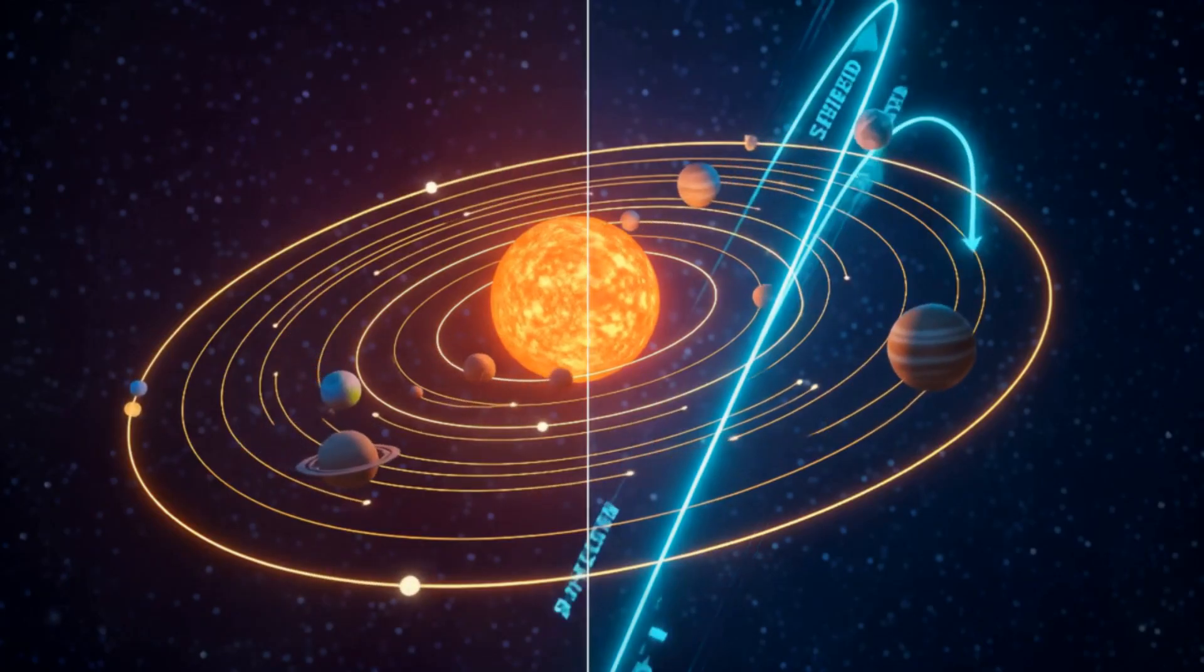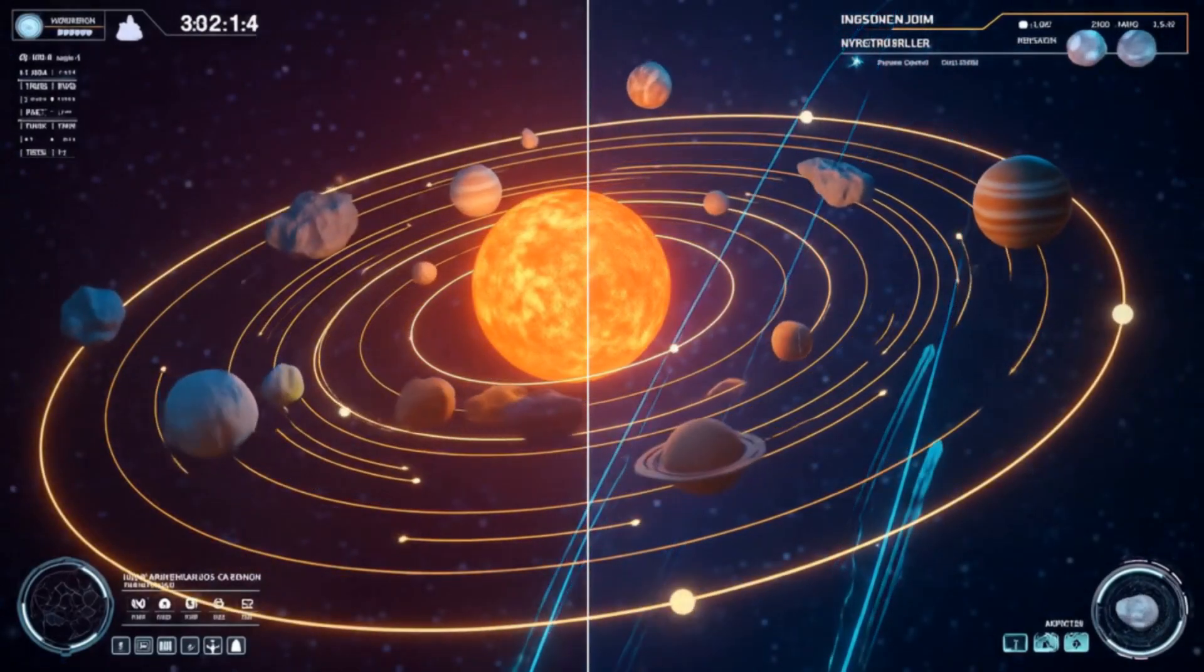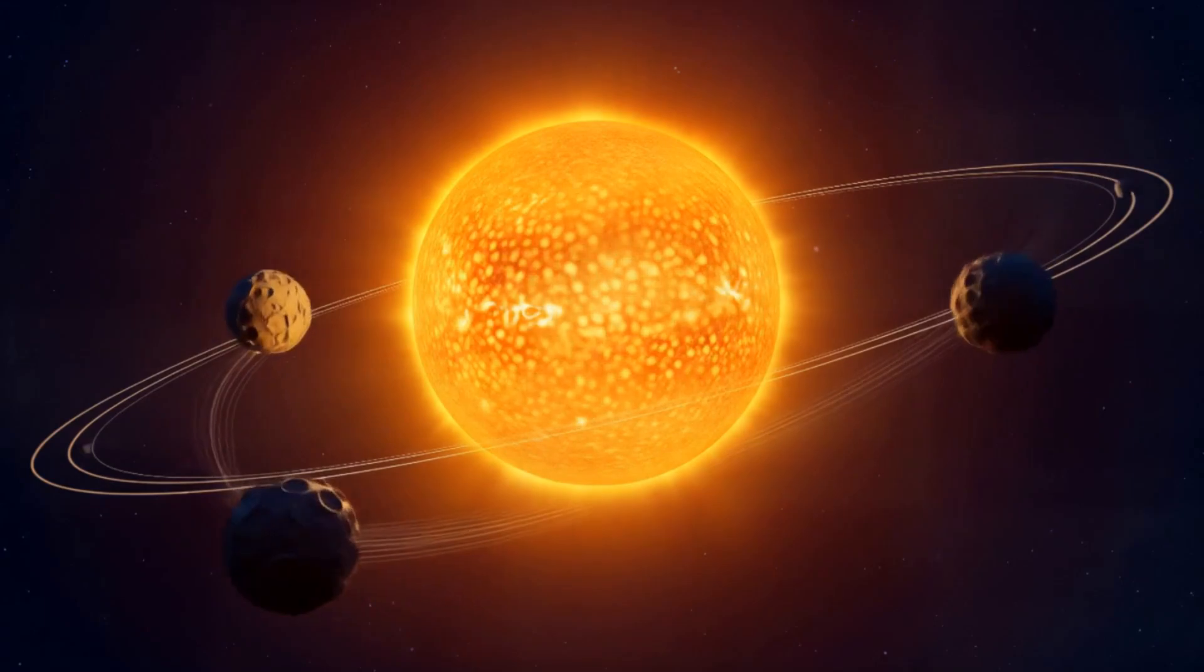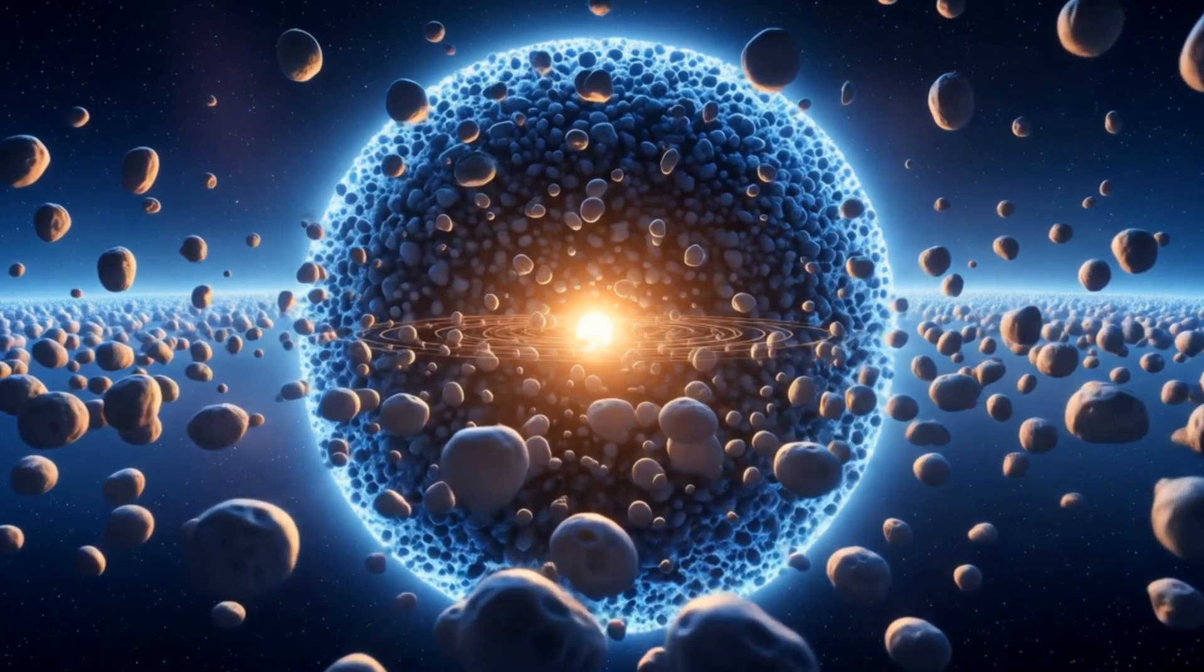Interstellar objects are cosmic wanderers that enter our solar system from deep space, traveling at incredible speeds on hyperbolic orbits. Unlike regular comets and asteroids, these visitors pass through our system once and leave forever.